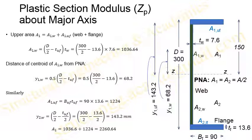We need to find the area of different segments and also know the distance of the centroid of each area from the plastic neutral axis. The upper area is formed of two segments: one is the web segment and the other is the upper flange segment. For the web segment, the length of web in the upper area is half the depth minus the upper flange thickness, multiplied by the web thickness.